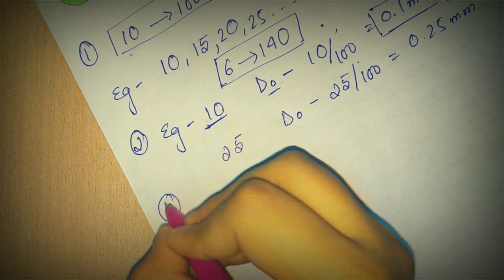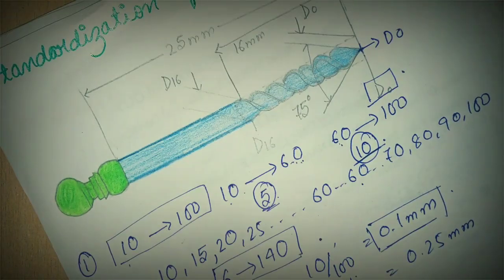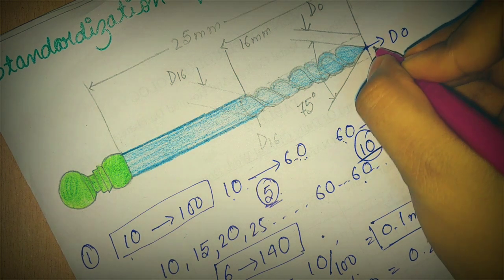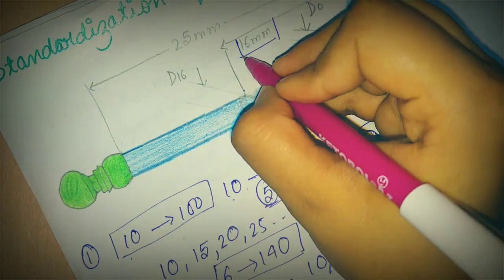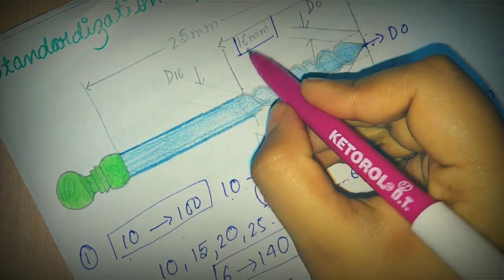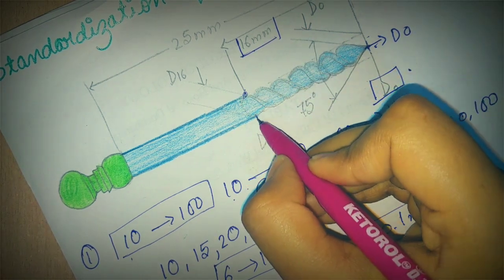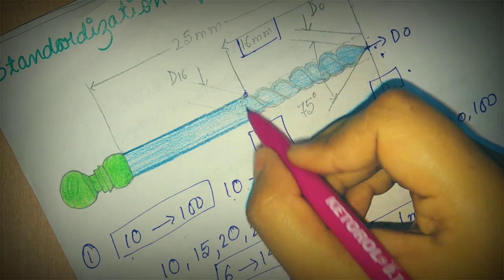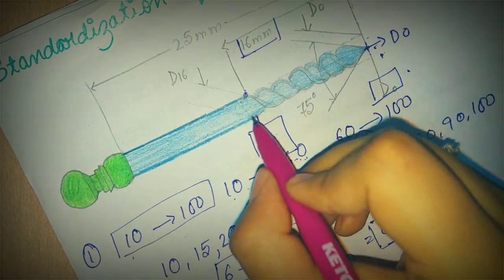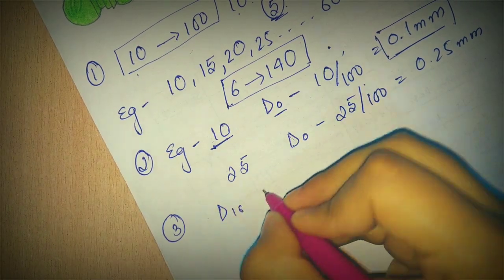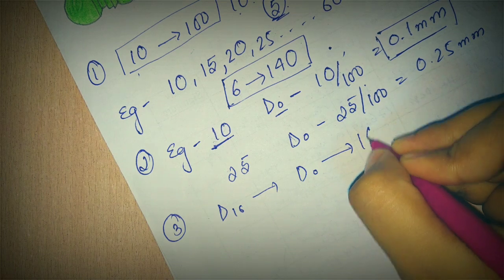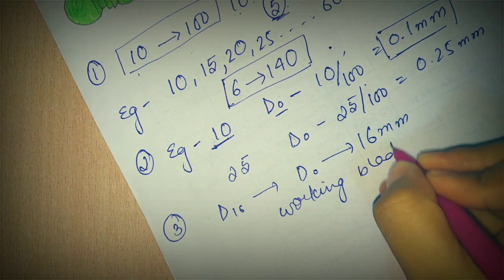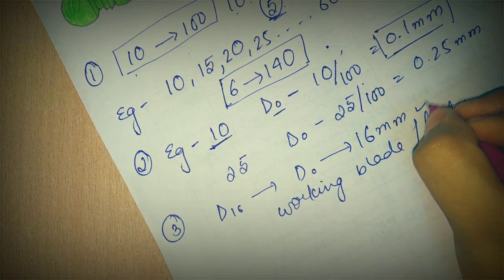Now coming to the third point. The working area, which is our working blade, which is our flute, will extend up till 16 mm from D0. From D0 to 16 mm is our working area. And this point is called D16. So this is D0 and this is D16. The tip is the D0 and the point where the working flute ends is D16. So D16 will be from D0 to 16 mm. That will be our working blade or you can say flutes.